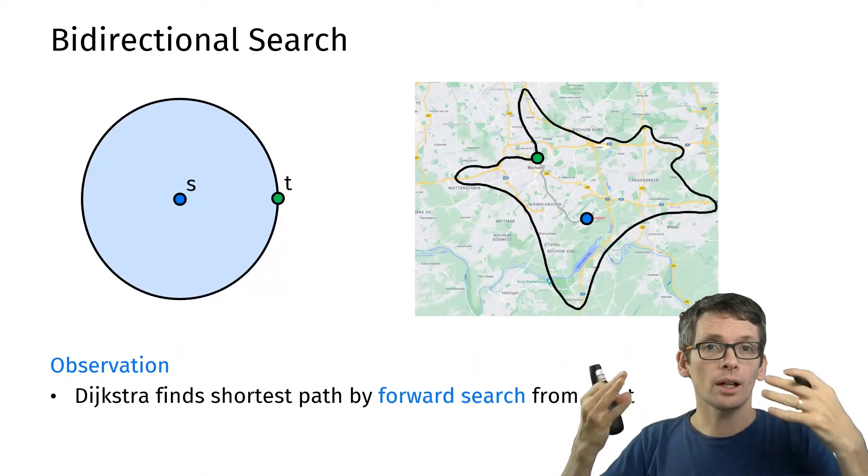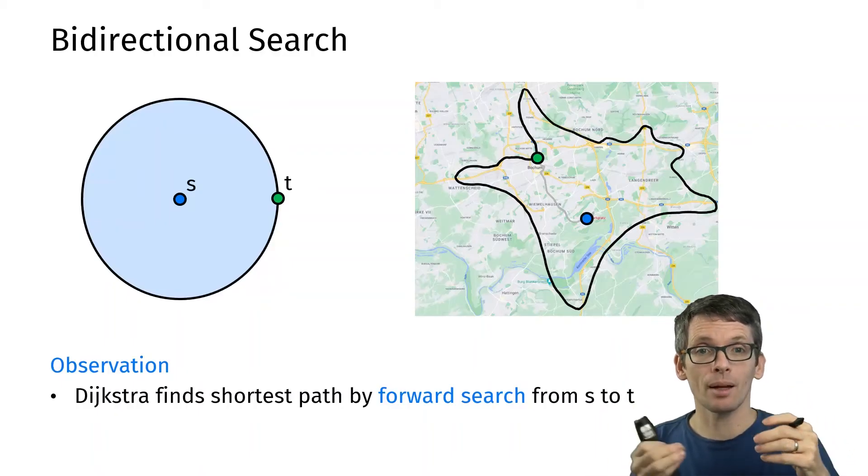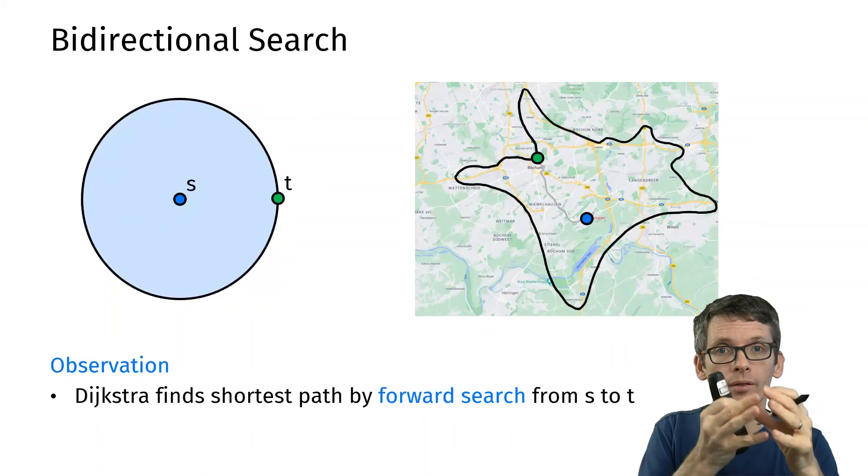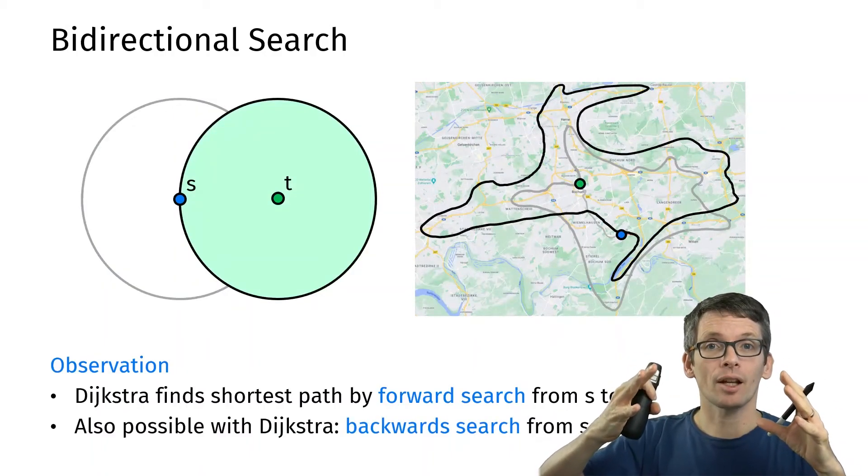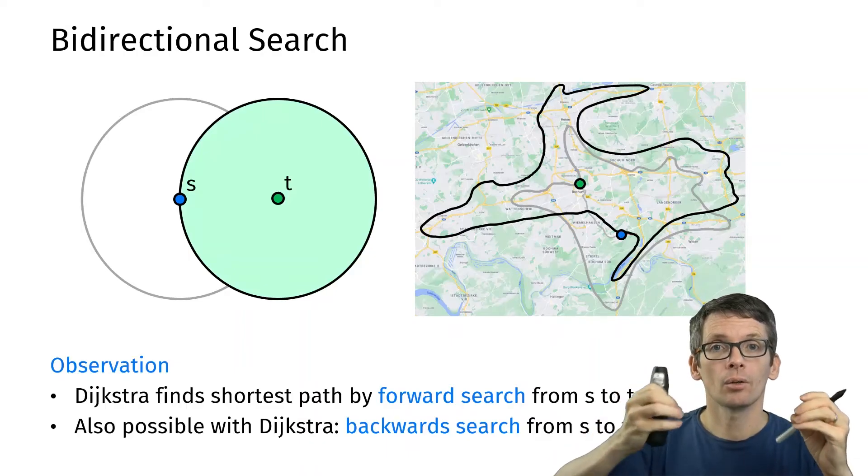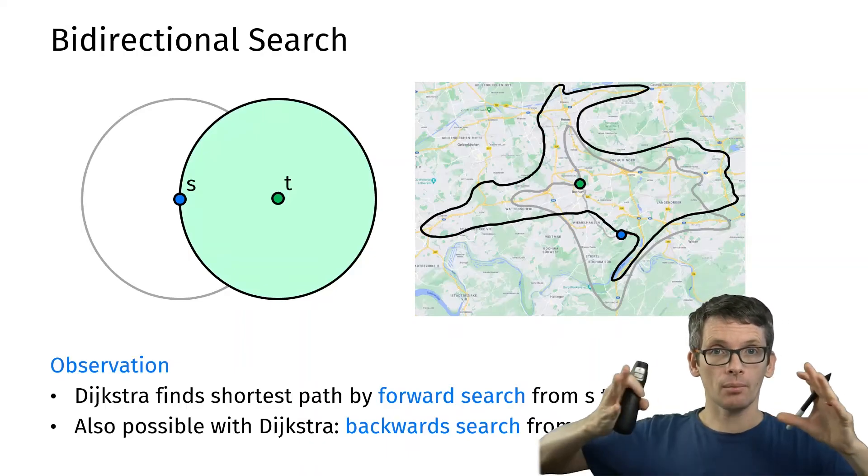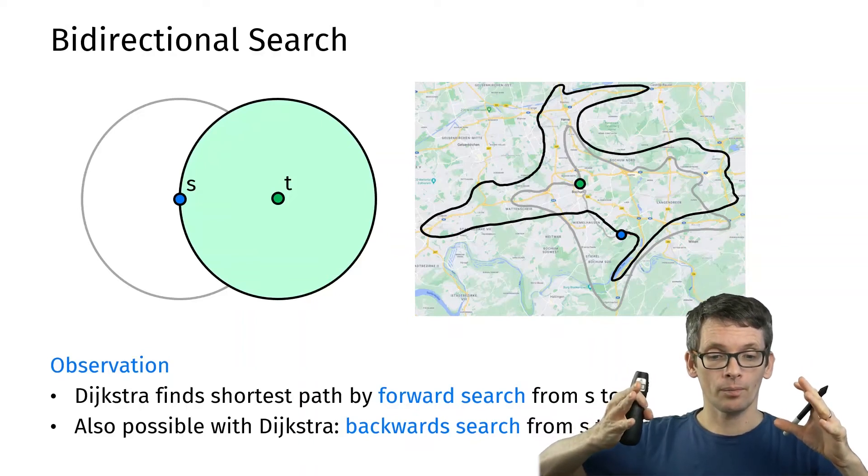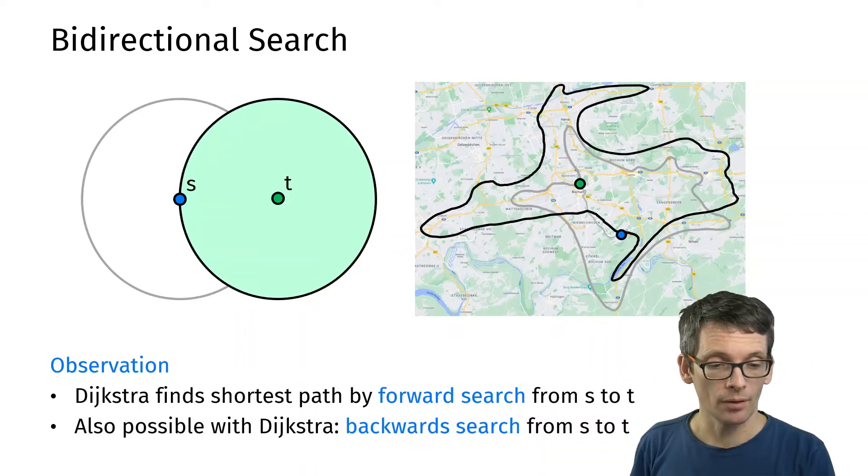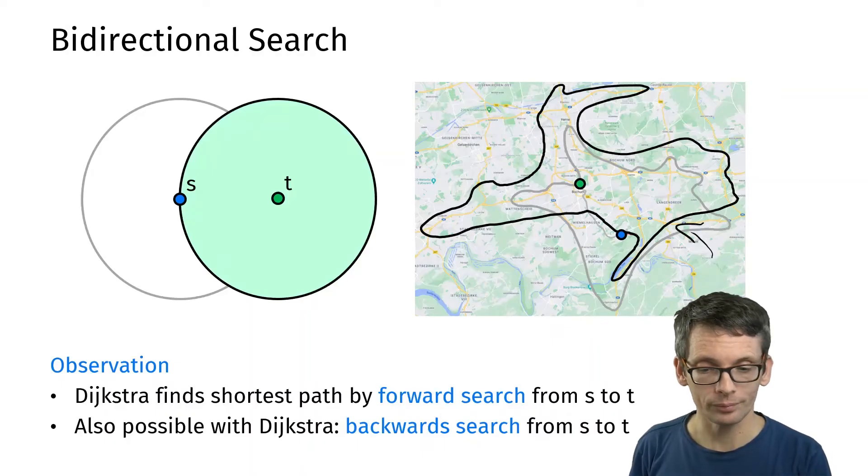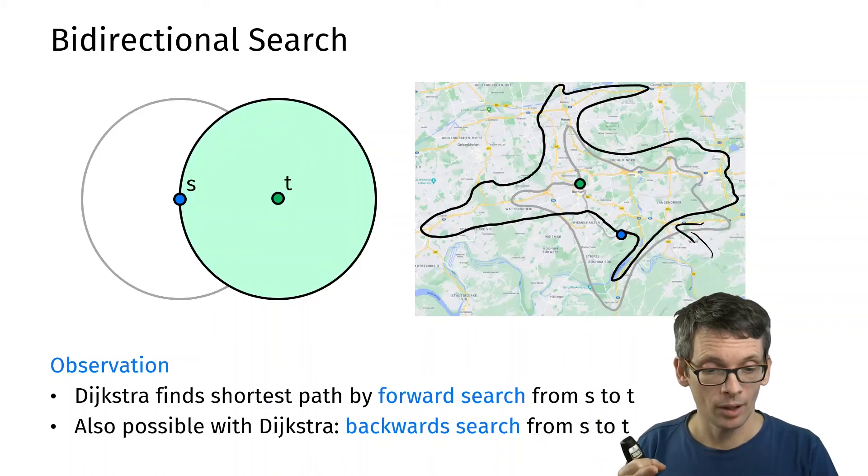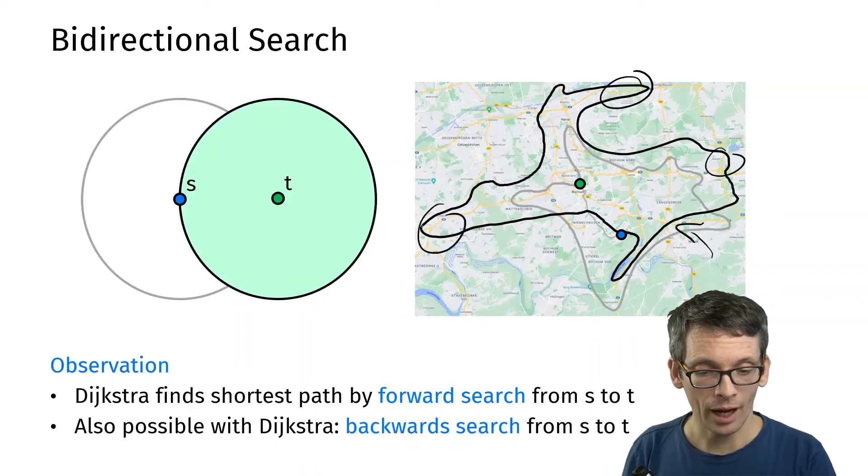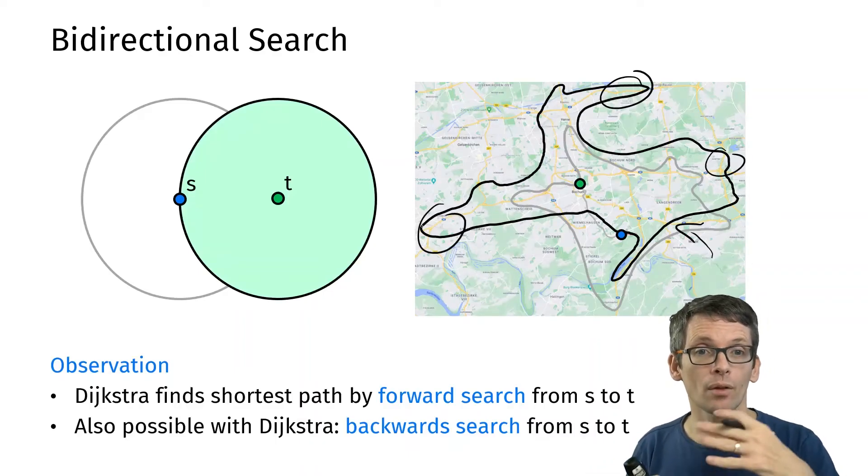The first one is that Dijkstra finds the shortest path by a forward search from s to t. You can imagine this as growing a ball around s until it hits t. We could have used Dijkstra's algorithm just as well doing the same from t, growing this ball around t and finding all of the places that can reach t until I hit my starting location and then I stop. That's the black shape that I drew here on the right.